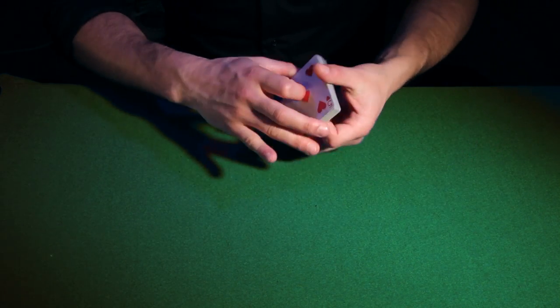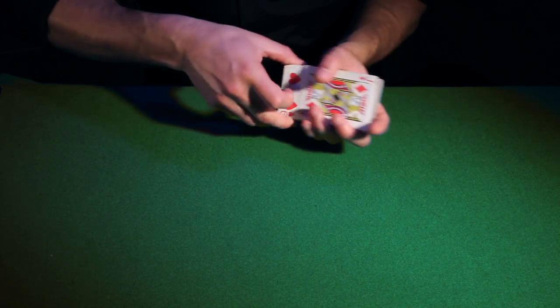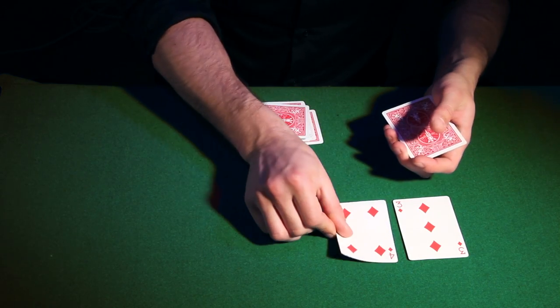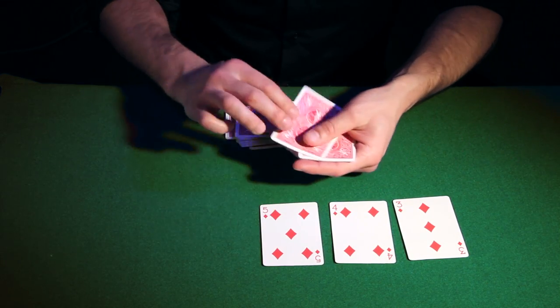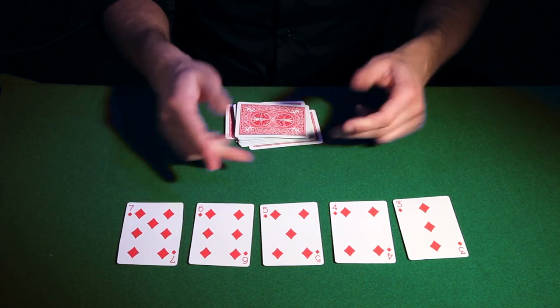It's a very strong hand, but not enough to beat the straight flush. This hand is a straight with all the cards of the same suit. In this case, we have the three, four, five, six, and seven of diamonds.